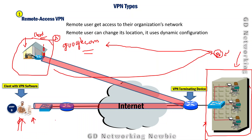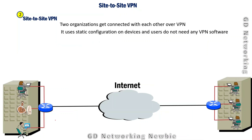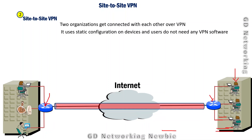The next type is site-to-site VPN. Here, one organization with two branches, or two different organizations, want to connect over VPN. In this case, some devices at each site have a static configuration. The users at these sites are not aware of the VPN connection and do not need any VPN software installed. With the required configuration, they can create a secure tunnel using the public infrastructure.